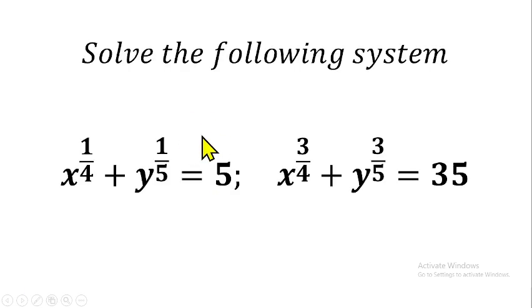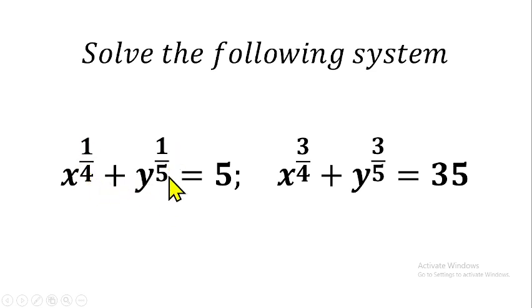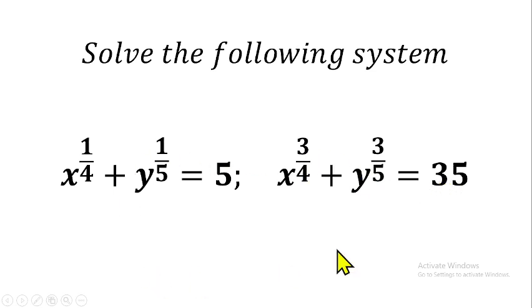The question is what you are seeing on the screen right now. We are to solve the following system: x raised to the power one over four plus y raised to the power one over five equals five, and x raised to the power three over four plus y raised to the power three over five equals 35. We have to solve these two equations simultaneously.